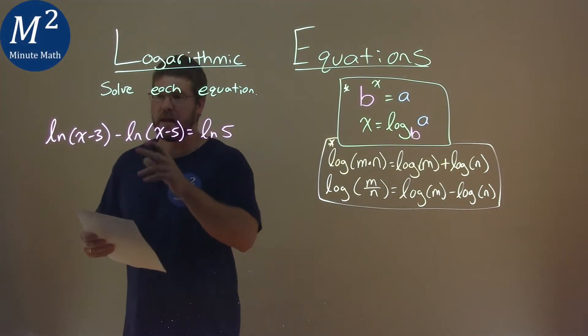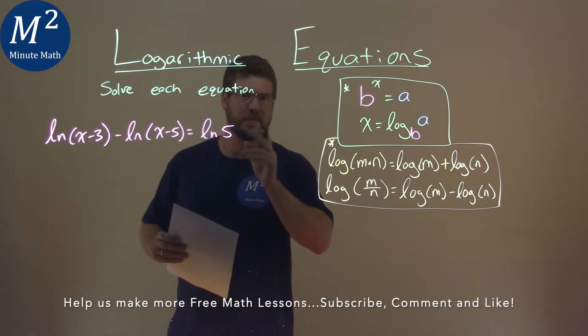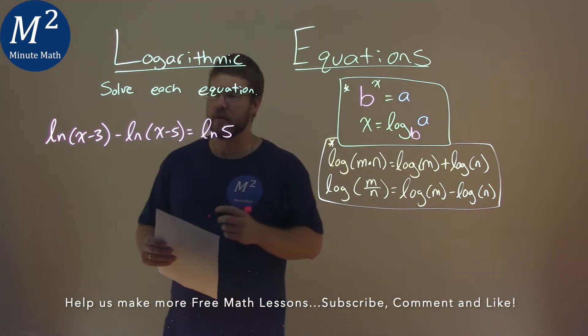We're given this problem right here. The natural log of x minus 3 minus natural log of x minus 5 is equal to natural log of 5, and we have to solve this equation.